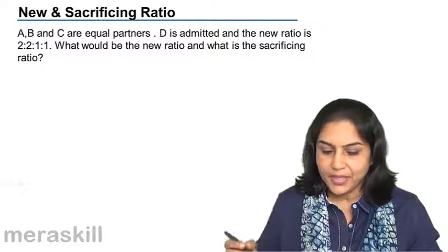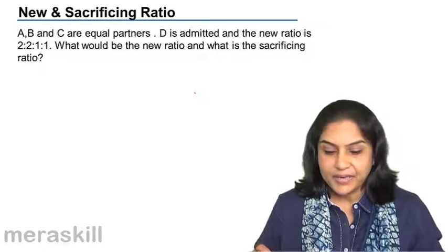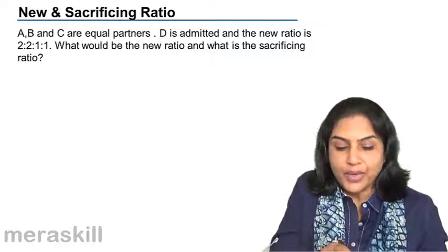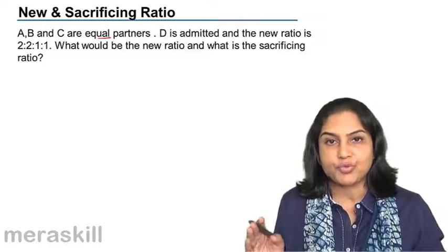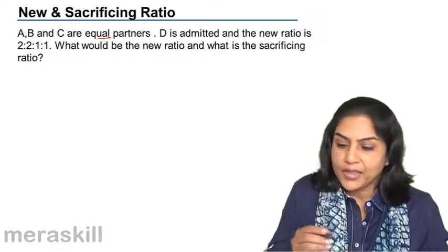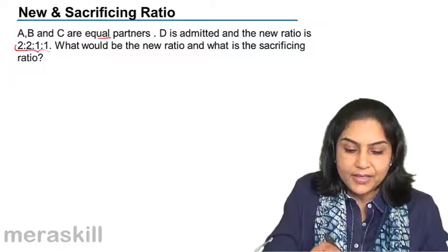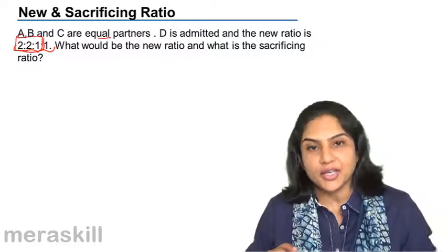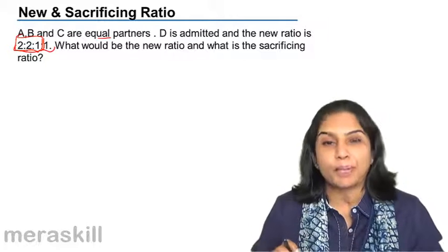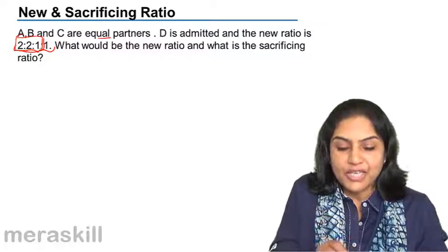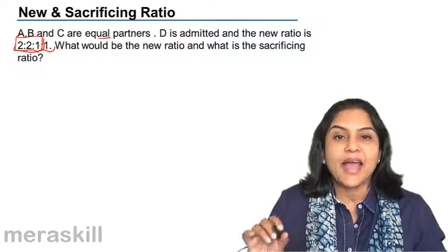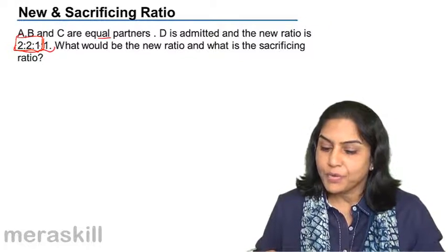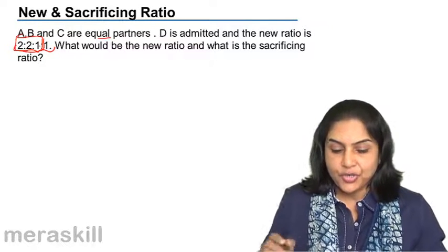Let us consider another example. A, B and C are equal partners and D is admitted; the new ratio is 2:2:1:1. The old ratio was 1:1:1 between A, B and C. But in the new situation after D's admission, the profit sharing ratio is 2:2:1:1. There is a change in the profit sharing ratio among the old partners after D's admission — it was equal before, and now it is 2:2:1 between A, B and C. In such a case, we have to compute the sacrificing ratio.